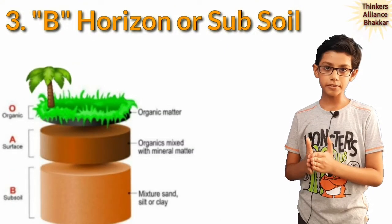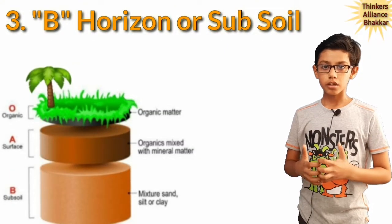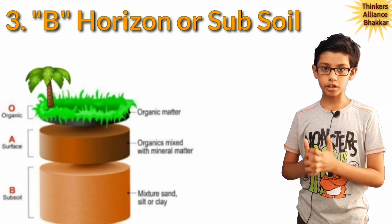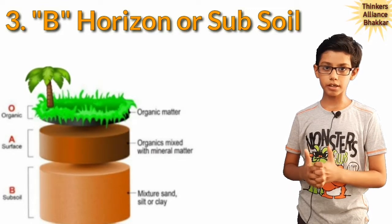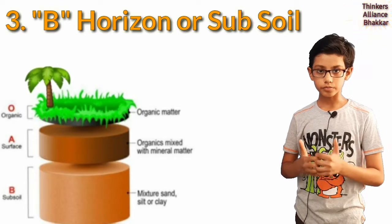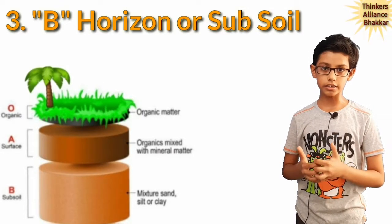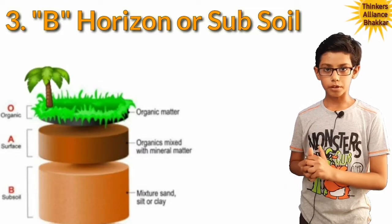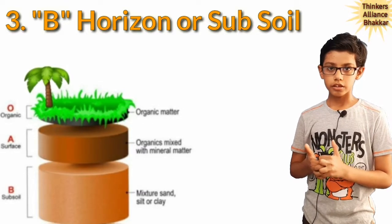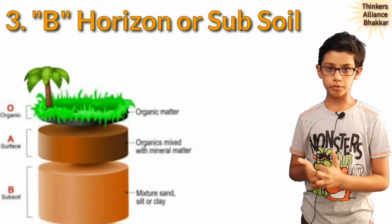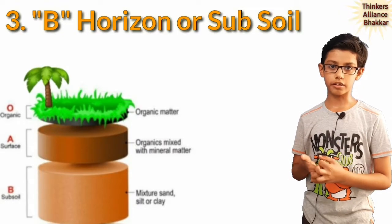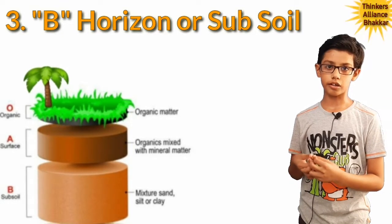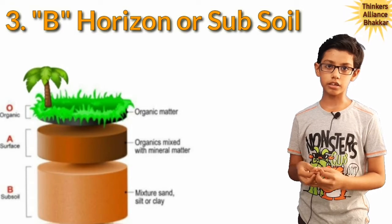Number three, B horizon or the subsoil. B horizon is tighter and more solid than the A horizon because it has less humus than the A horizon. For this reason, it is also light in color.